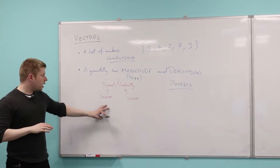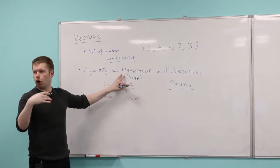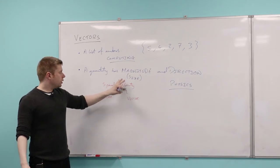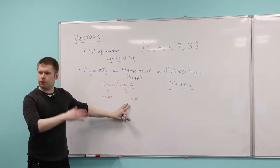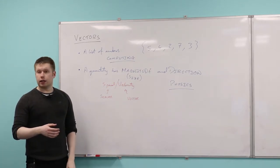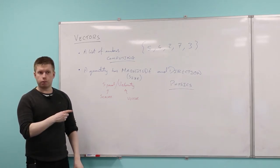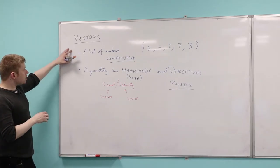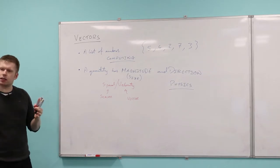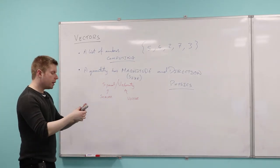So a scalar is just a quantity, it's just a magnitude. So for example, height, distance. But as soon as you start incorporating direction in there as well, it becomes a vector. Any questions so far? So these are two nice definitions, and I give you these definitions because some people have heard of vectors in lots of different places.